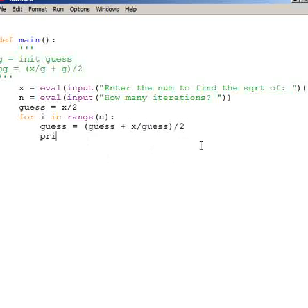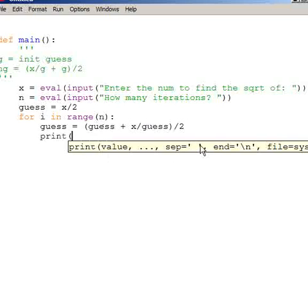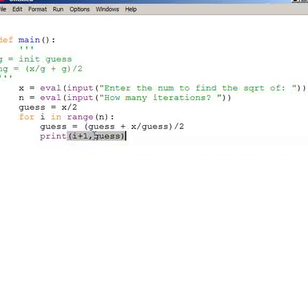And what I can do here - it's a good strategy on your way to writing the final program - is to go ahead and print. Let's print the iteration number, which would be i plus one, because I'm starting with zero. So i plus one would be the iteration number, comma, whatever the new value of my guess is.